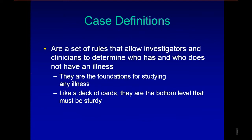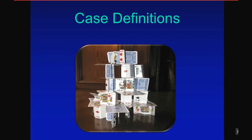Case definitions are a set of rules that allow investigators and clinicians to determine who has and who has not an illness. They are a foundation for studying any illness. Like a deck of cards, they are at the bottom level that must be sturdy. This is an example of what a case definition should look like — it should have a sturdy foundation so the top can be more sturdy.